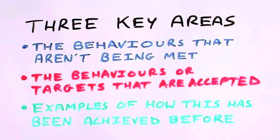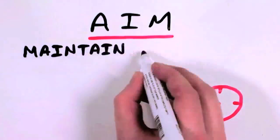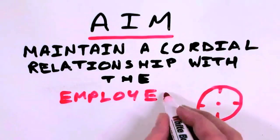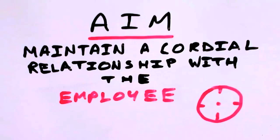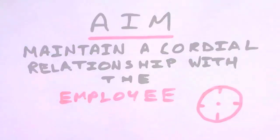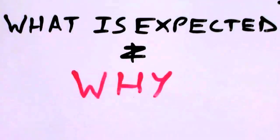Essentially, we're teaching people what the expected performance or behavioral standards are. The aim at this level is to maintain a reasonably cordial relationship with the employee, but essentially we are starting the process of having a management game face, and therefore making it very clear behaviorally to our employees what is expected and why.